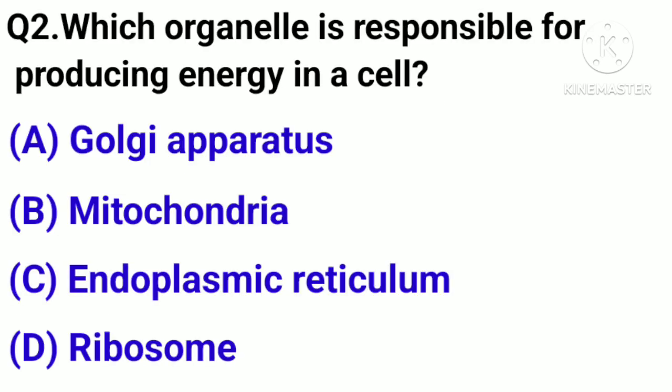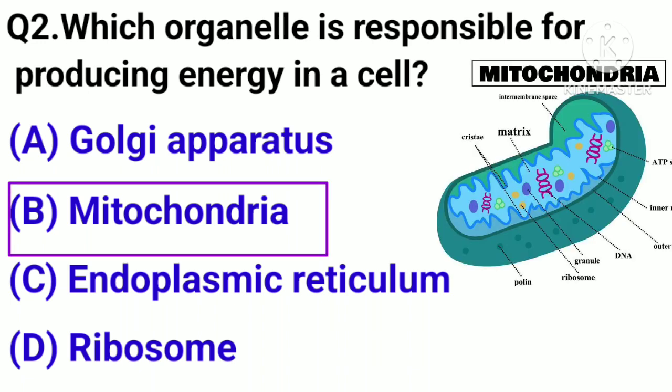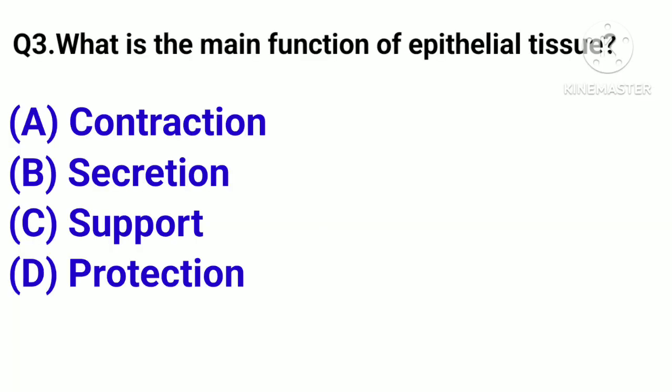Question number 2. Which organelle is responsible for producing energy in a cell? Option A: Golgi apparatus. B: Mitochondria. C: Endoplasmic reticulum. D: Ribosome. Correct answer: Option B, Mitochondria.